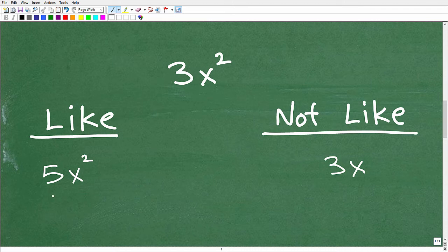So I'm going to write down a term here that's like to this term, and then I'm going to write one that's not like. So why do you think this is like and this is not like? I'm not tricking you. 3x is not like to 3x squared. 5x squared is a like term to 3x squared. Now, why is that? Hopefully you're picking out the patterns here. Well, the main thing is this. What makes something a like term is it has the exact same variable and power as the term you're comparing it to.